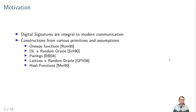We look at digital signatures, and as we all know, they are an integral part of modern communications and basically ubiquitous. Various assumptions and primitives have been shown to yield digital signatures. For example, we know that one-way functions are sufficient and necessary to build digital signatures, and we can also build them from discrete logarithm assumptions and the random oracle model — for example, Schnorr signatures — from pairings like Boneh-Boyen signatures, from lattices and random oracles, e.g. the construction of Gentry et al., and hash functions like Merkle trees.